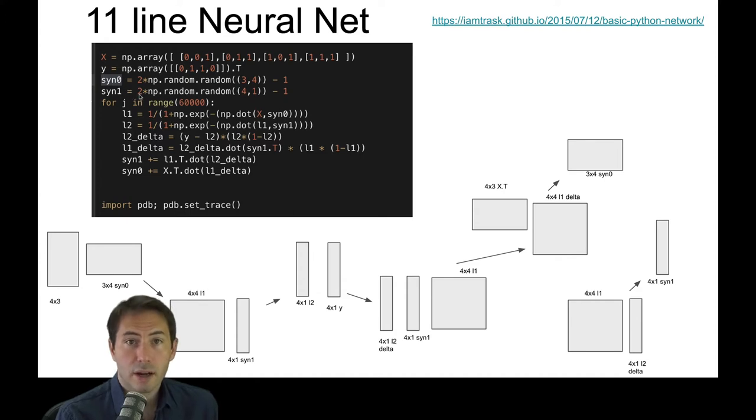And we'll do the same thing for the first layer of the synapses, where we'll have two times random, a four by one. So we have a three by four matrix and a four by one matrix that we'll be working with.